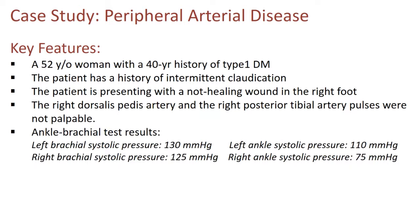Ankle brachial test results: On the left side, the left brachial systolic pressure is 130, and the left ankle systolic pressure is 110 — less than the upper limb, indicating a problem. On the right side, the right brachial systolic pressure is 125, and the right ankle systolic pressure is only 75 — much, much lower. The difference is much more than 10%, which is significant as we're going to see.